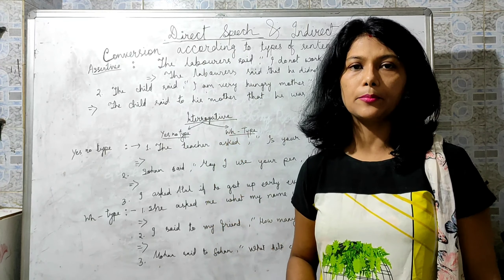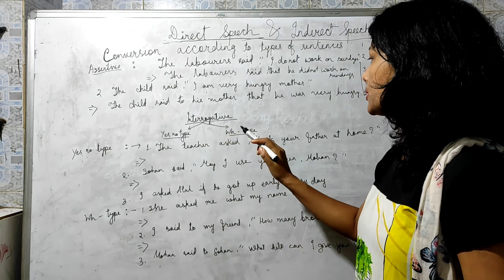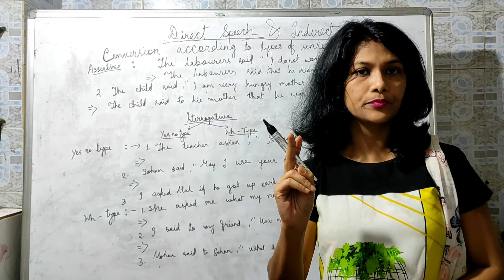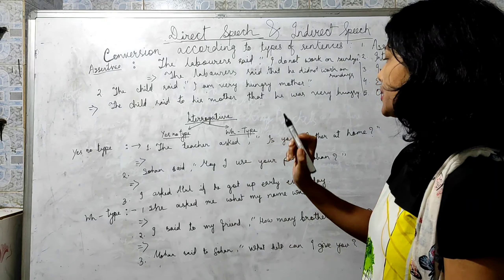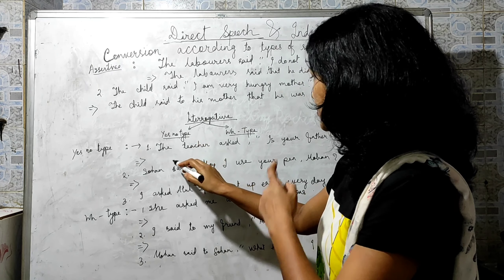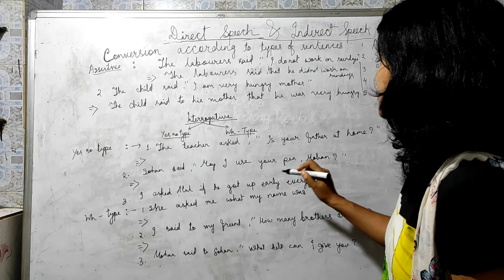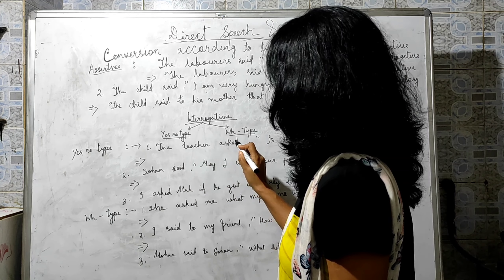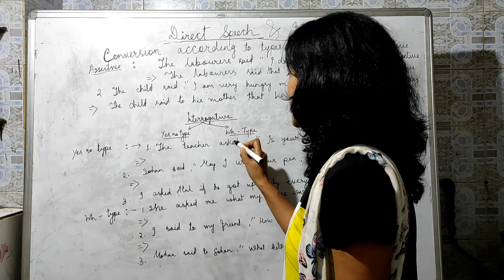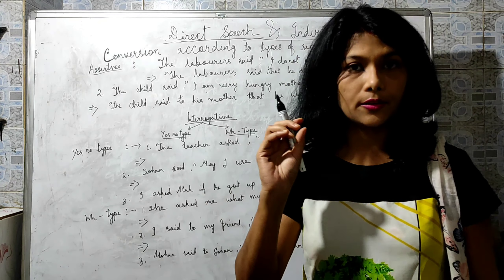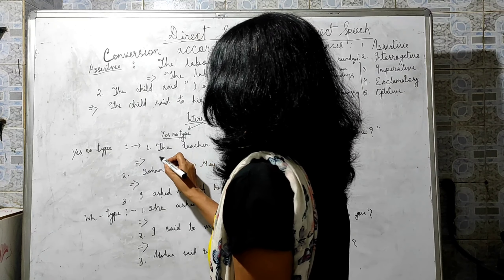Now for interrogative sentences — two types: yes/no type and WH type, each with different rules. For yes/no type: if 'ask' is not there and 'said' is there, you use 'asked.' In interrogative sentences you don't use 'that' — instead you use 'if' or 'whether.' Example: 'The teacher asks if or whether his father was at home.'